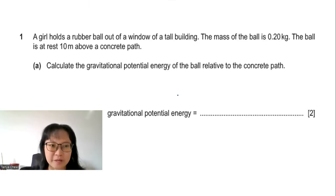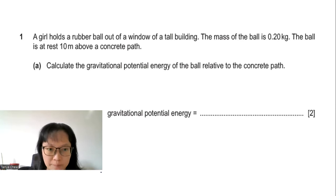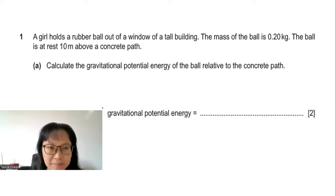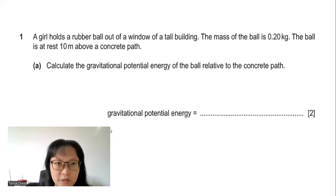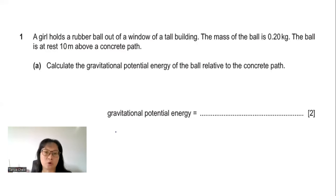Let us begin with the first question. A girl holds a rubber ball out of a window of a tall building. The mass of the ball is 0.2 kg. The ball is at rest, 10 metres above a concrete path. Calculate the change in gravitational potential energy of the ball relative to the concrete path.